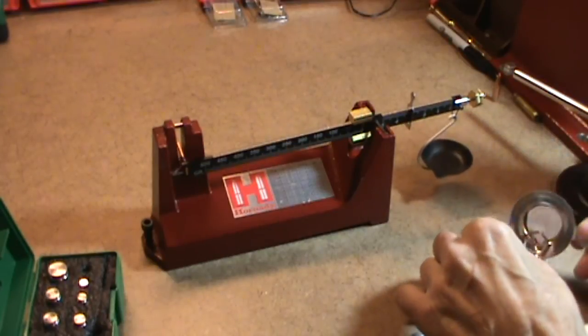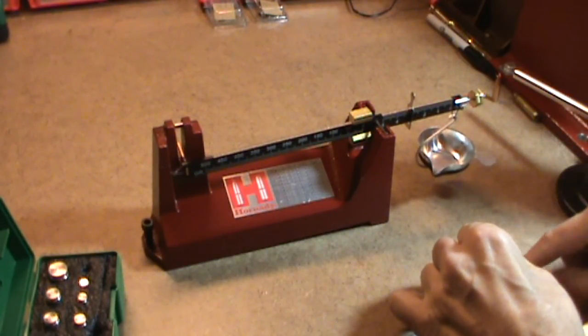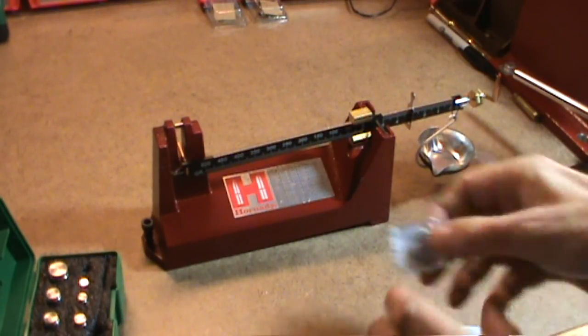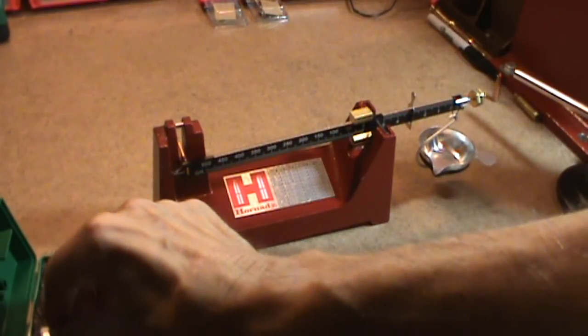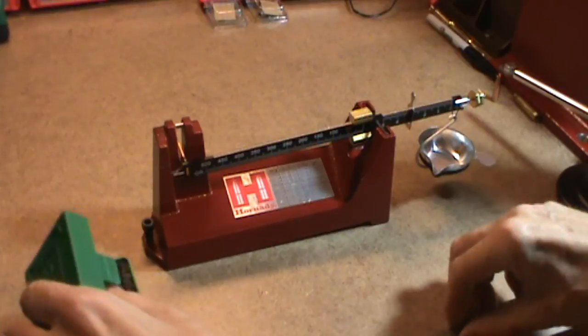So, scale is relatively accurate. It gets a little bit off when I get out into the hundreds of grains. Of course, chances of me ever doing a load with 290 or 300 grains of powder are fairly slim.